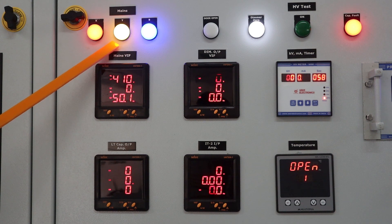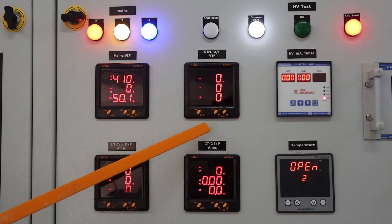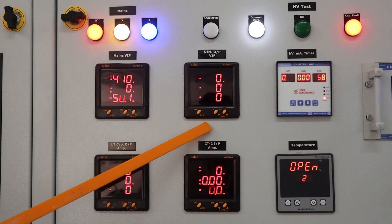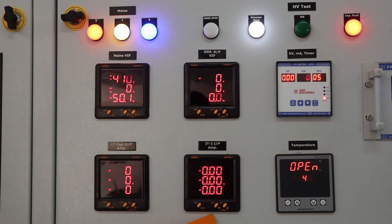This is RYB main supply indication lamp. This is VIF meter for mains input supply. This is VIF meter for dimmer output. This is ampere meter for LT capacitor bank output. This is ampere meter for step up transformer input IT2.